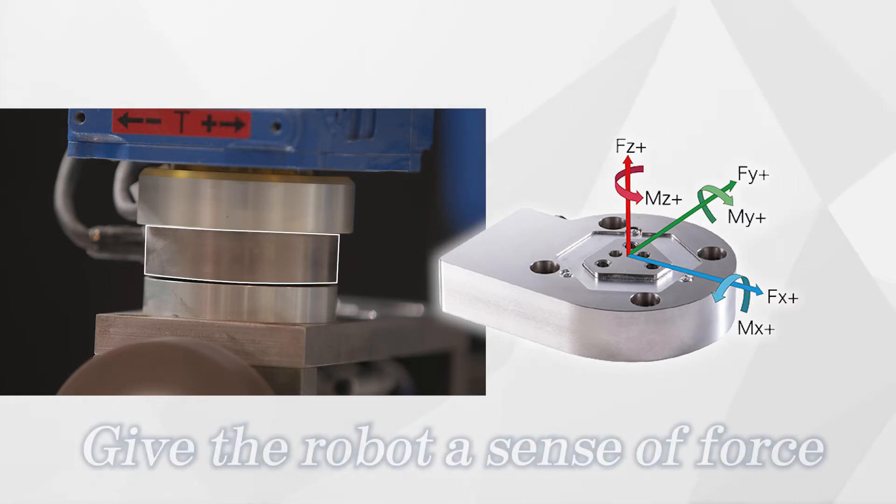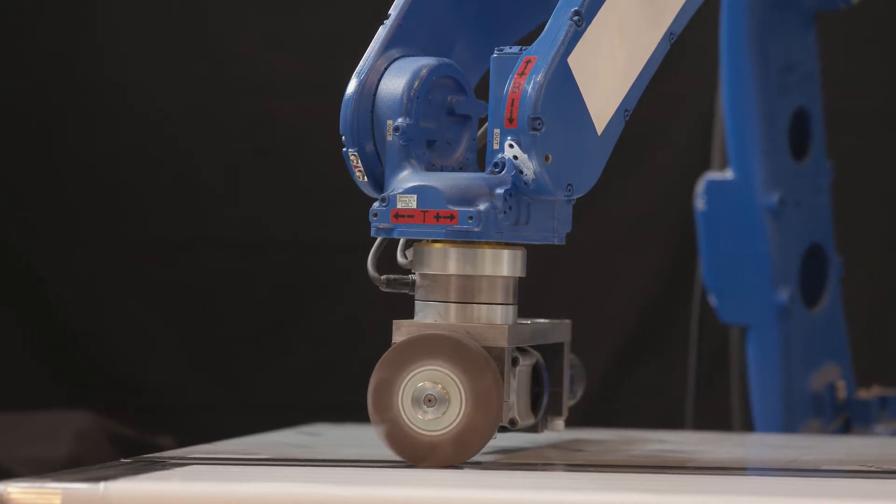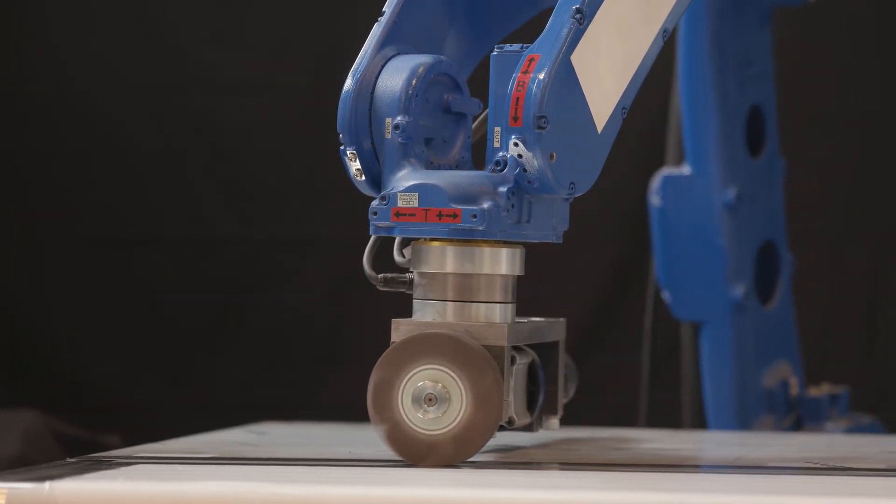By equipping your robot with the Zixxer, you can give the robot a sense of touch and force. With sense of force, your robot can replicate the motions of a highly skilled worker.